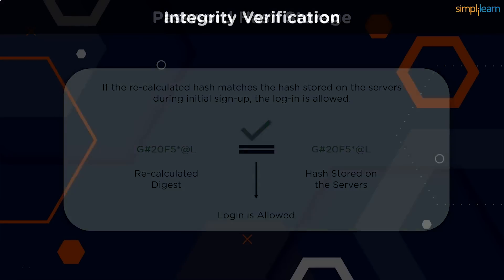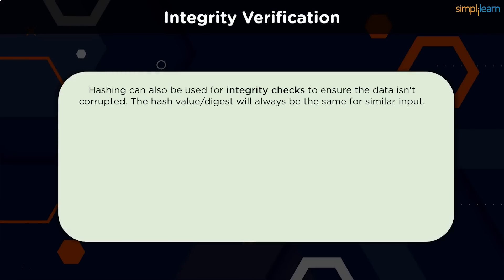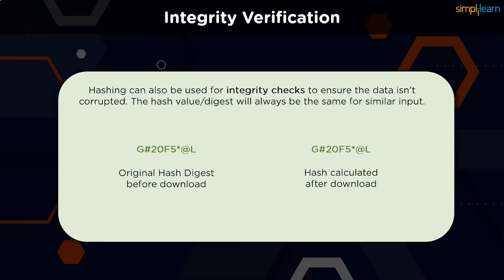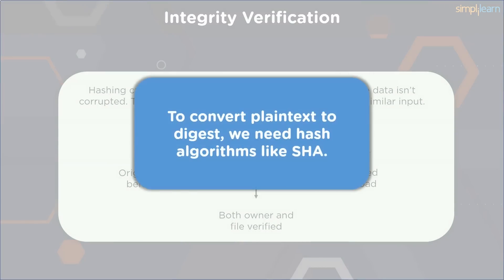We also use hashing when it comes to verifying data integrity. When a user uploads a file onto the internet, he or she can pass the file through a hash function and upload its digest as well. When a new user downloads the file, they can again pass the file through the same hash function. The digest values are then compared, and if they match, the data integrity is verified and the file was not corrupted in transit. Such an example of a hash function is the SHA algorithm.